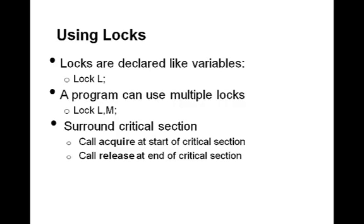To use a lock within a critical section is simple. Put a call to acquire a lock at the start of the critical section — this makes sure that only one thread can enter the critical section at a time. Put a call to release at the end of the critical section, which allows other threads to enter because this first thread is done. This achieves our requirements of mutual exclusion and progress for implementing critical sections.